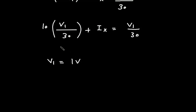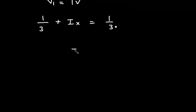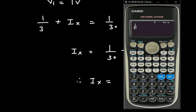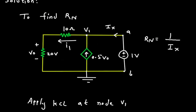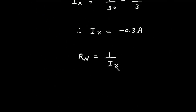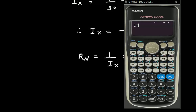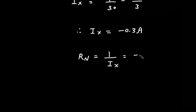With V1 equal to 1V, this becomes 1/3 plus Ix equal to 1/30. Therefore Ix is equal to 1/30 minus 1/3, which gives minus 0.3 ampere. Therefore Rn is equal to 1 divided by Ix, which equals 1 divided by minus 0.3, giving Rn equal to minus 3.3 ohm.